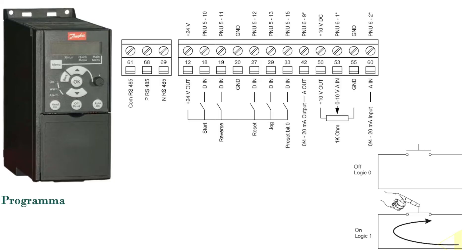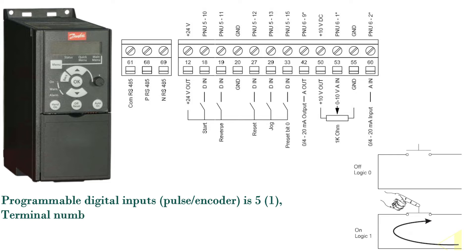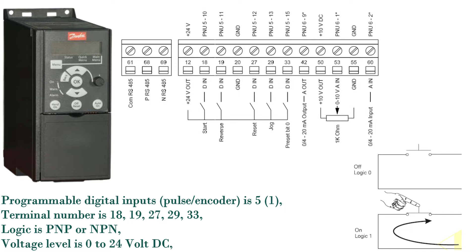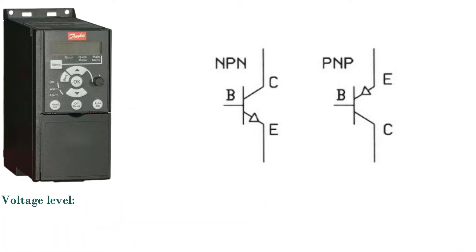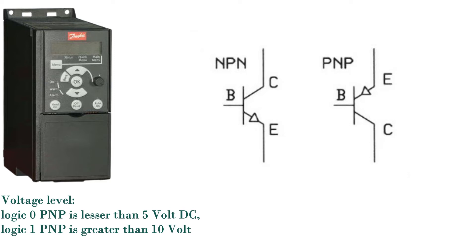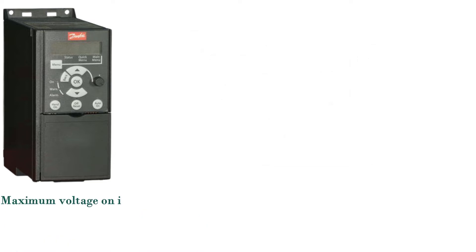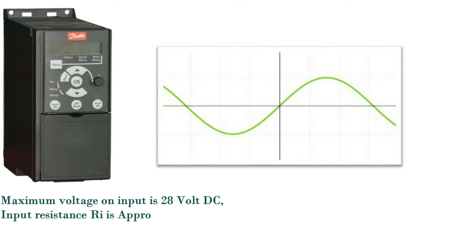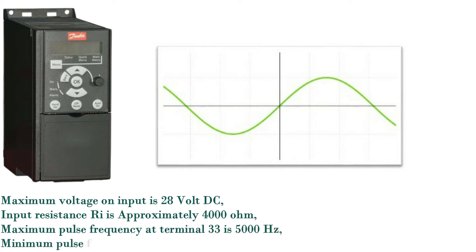Digital inputs: programmable digital inputs plus pulse/encoder is 5+1. Terminal numbers are 18, 19, 27, 29, 33. Logic is PNP or NPN; voltage level is 0 to 24 volt DC. Logic 0 PNP is less than 5 volt DC; logic 1 PNP is greater than 10 volt DC; logic 1 NPN is less than 14 volt DC. Maximum voltage on input is 28 volt DC; input resistance RIN is approximately 4,000 ohm. Maximum pulse frequency at terminal 33 is 5,000 Hz; minimum pulse frequency at terminal 33 is 20 Hz.